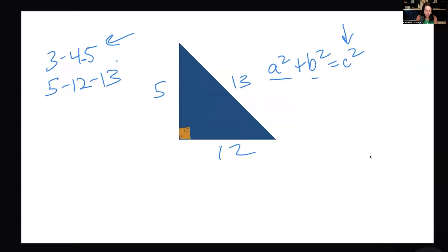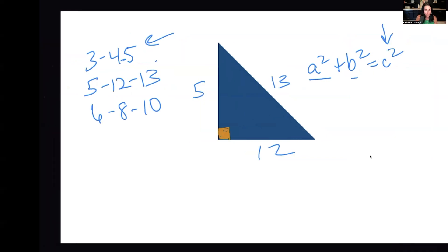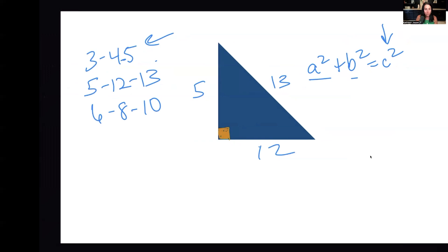Another triple is 6, 8, 10. If one leg is 6 and the other is 8, the hypotenuse is 10. Another Pythagorean triple we already covered is 9, 12, 15. And one of the most common is 15, 20, 25. If you can remember these, they will help you on any math exam.